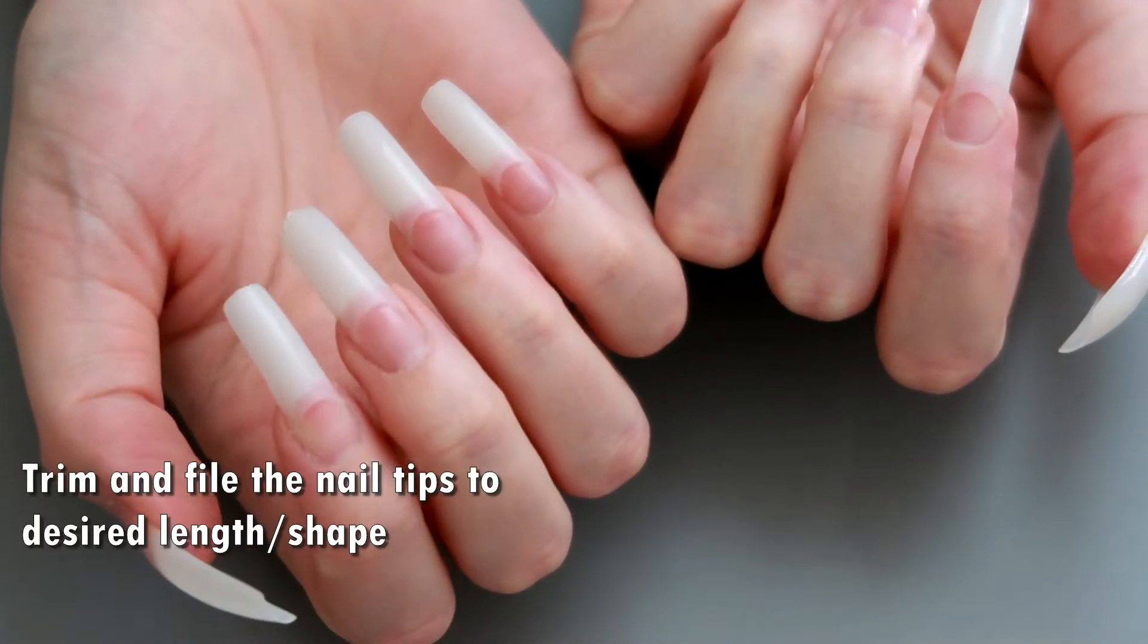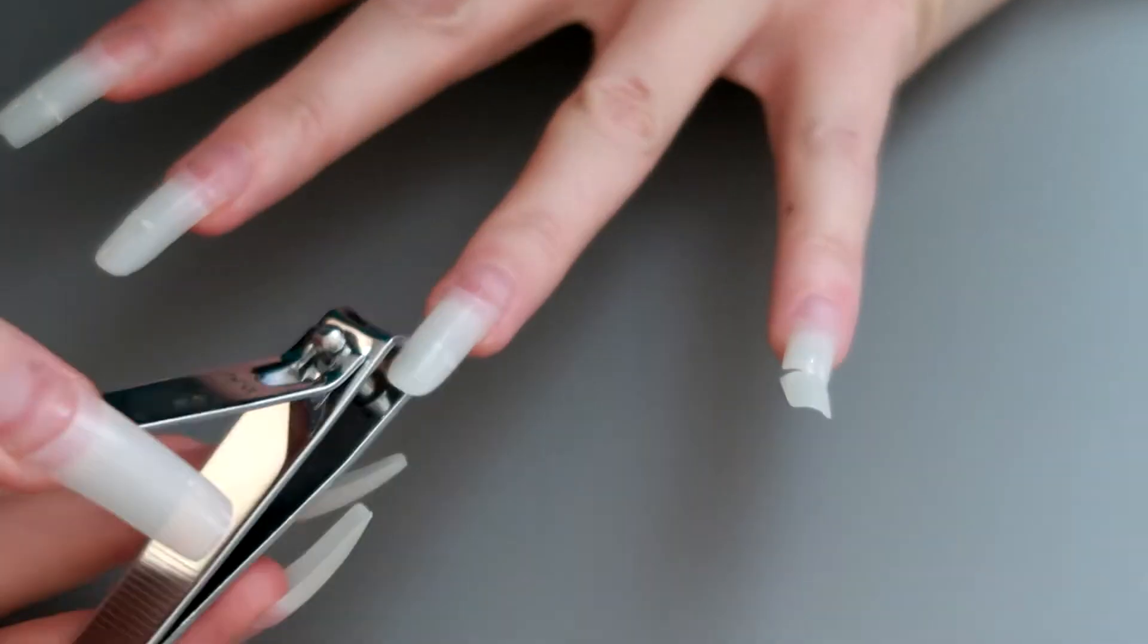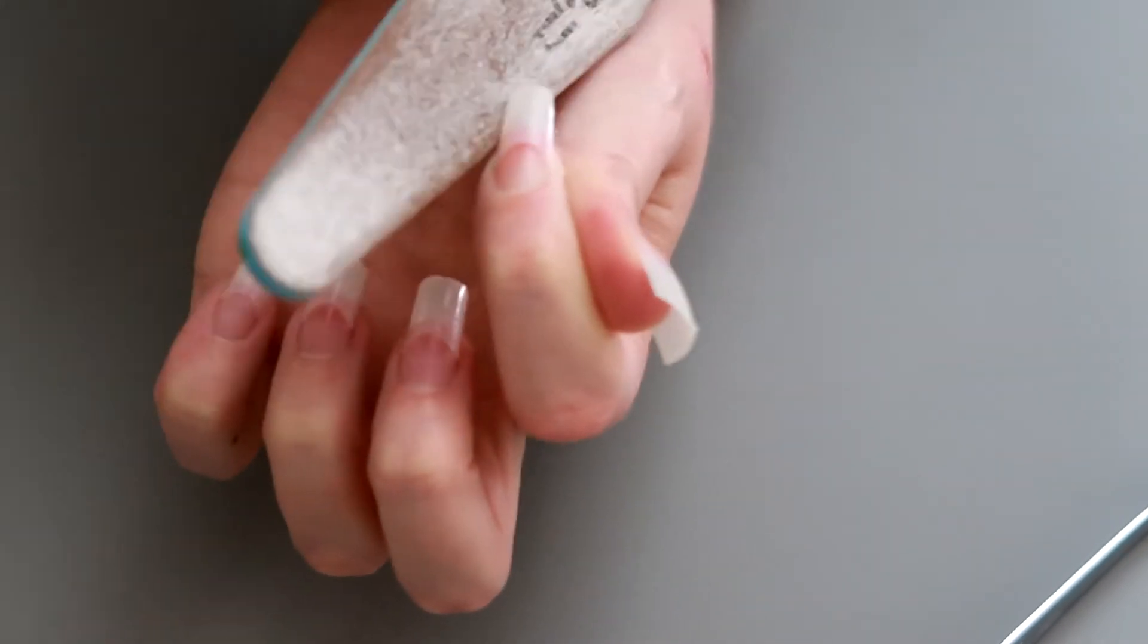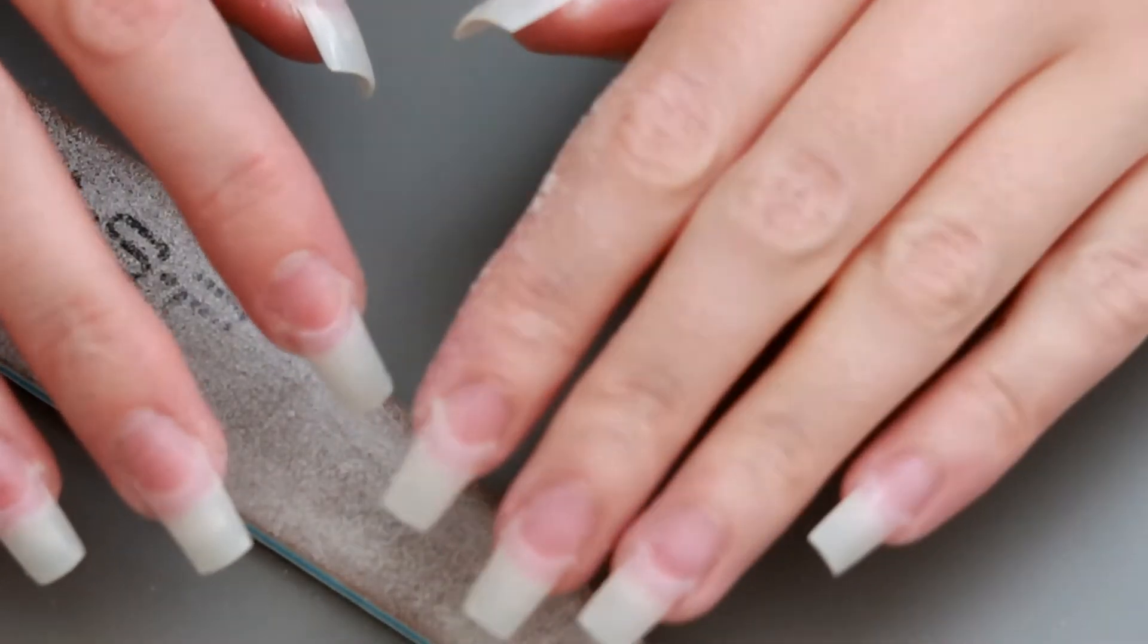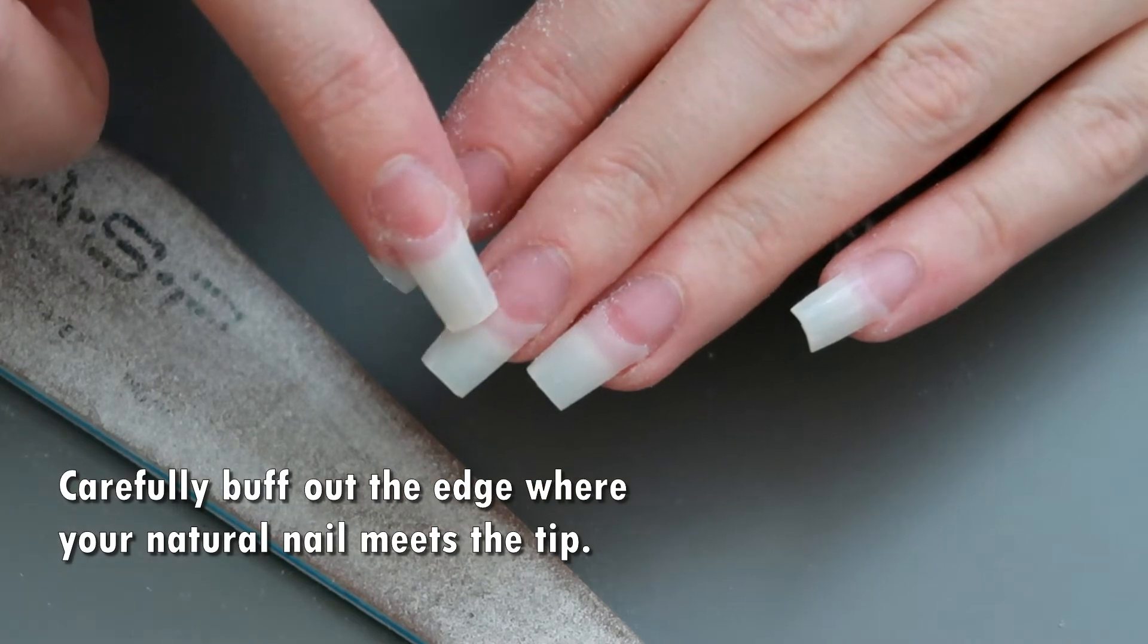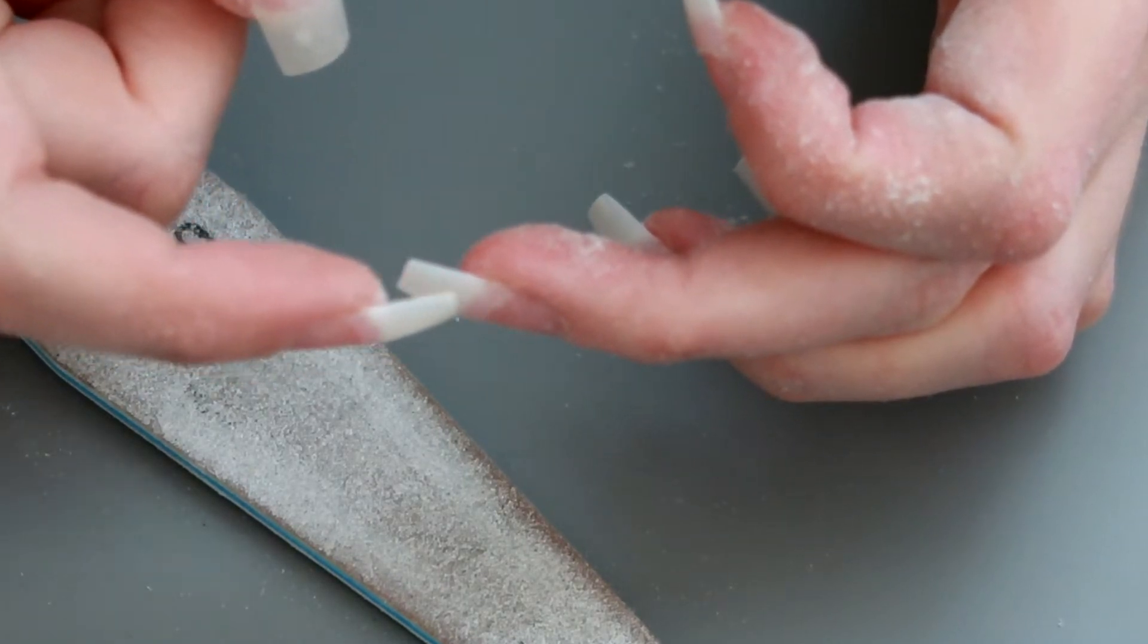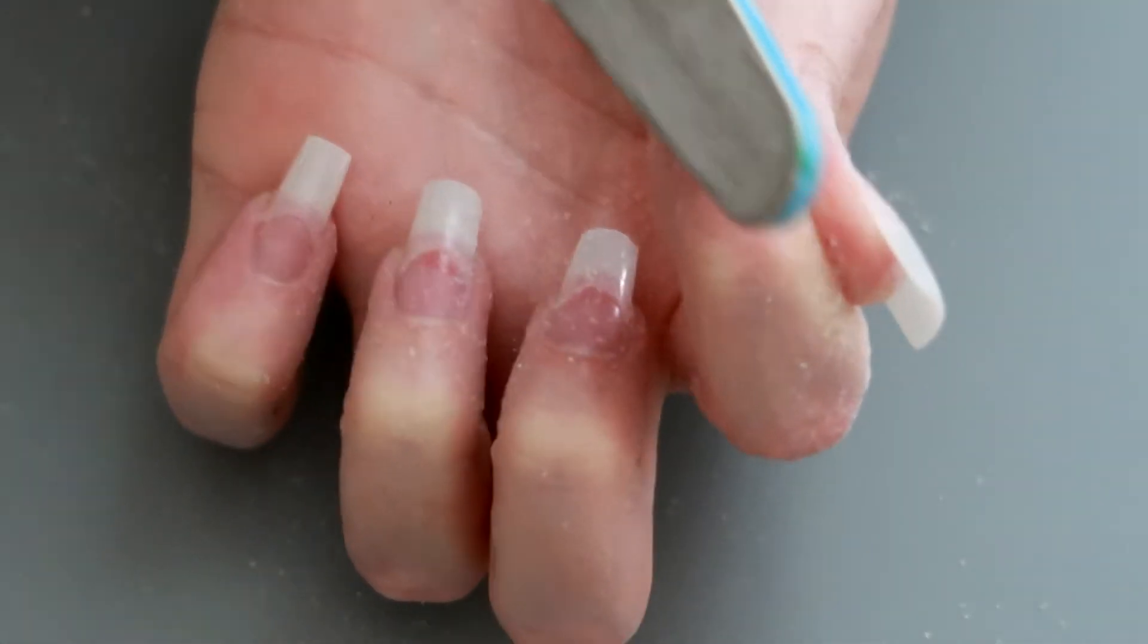Once you've got your nail tips glued on trim and file them to whatever length and size and shape you want. Once you've got the nails shaped, the next step is to gently, very carefully buff out the line where your natural nail meets the tip. The reason I say to do this carefully is so that you don't over file your natural nail. That's how they grow back really thin is how many times you have to file your nails when you do fake nails.